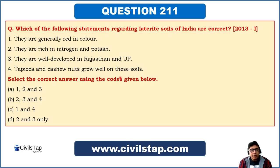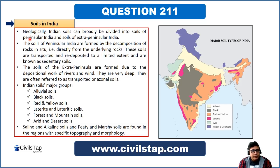Before we answer, let us discuss the major soils in India so we can solve this and other soil-related UPSC questions. Geologically, Indian soils can broadly be divided into soils of peninsular India and soils of extra-peninsular India. These include regions like the Himalayas, deserts, and northern plains.